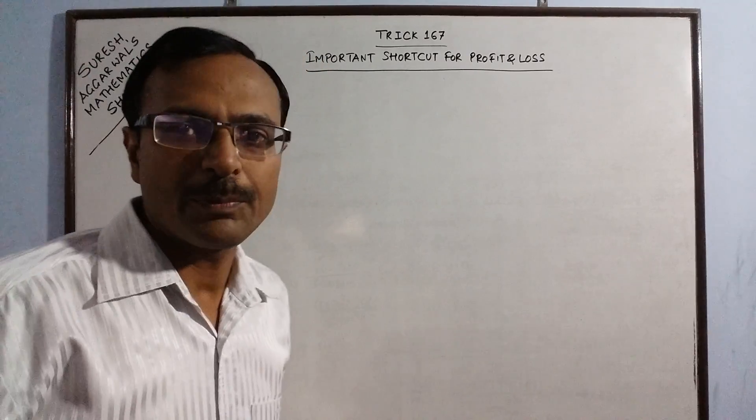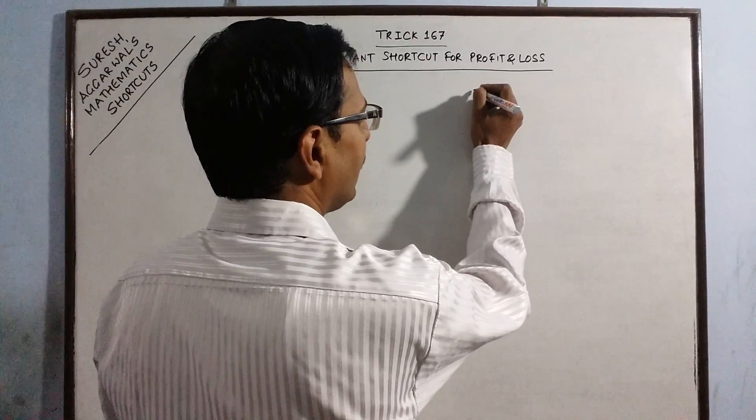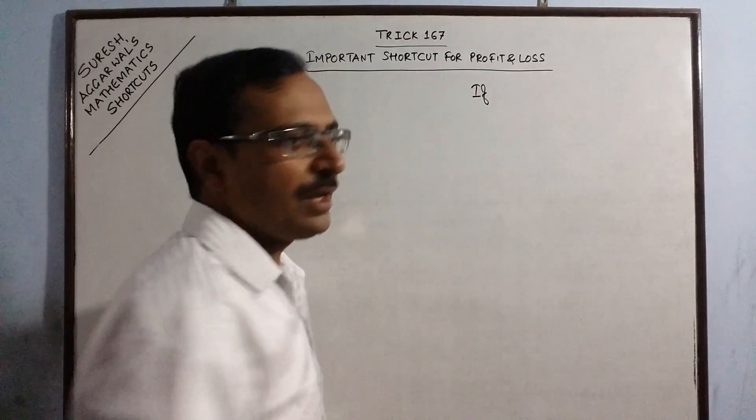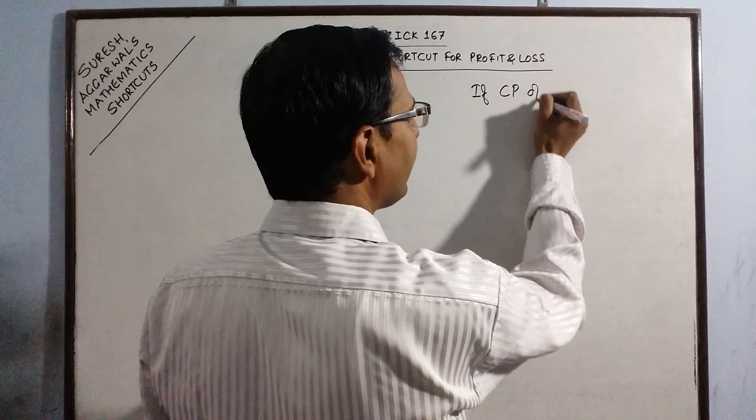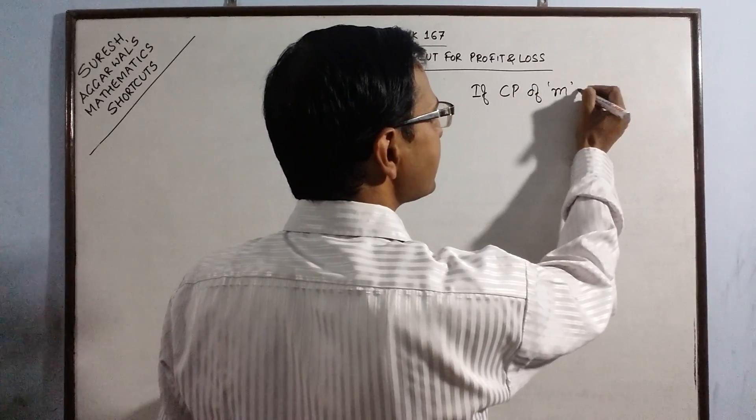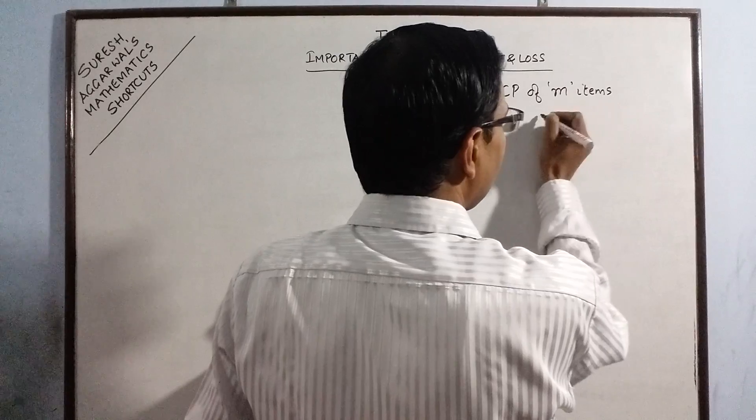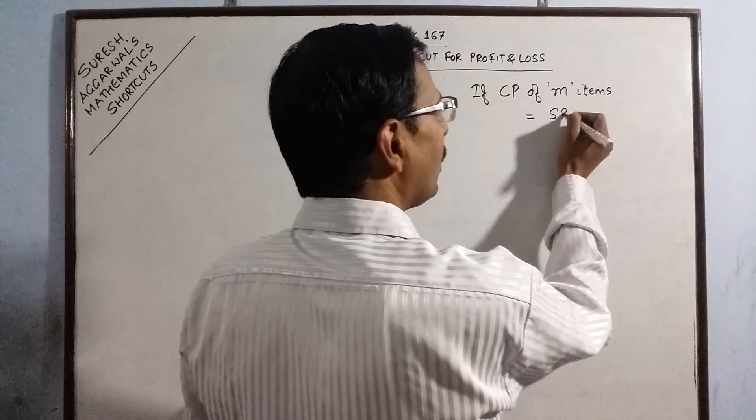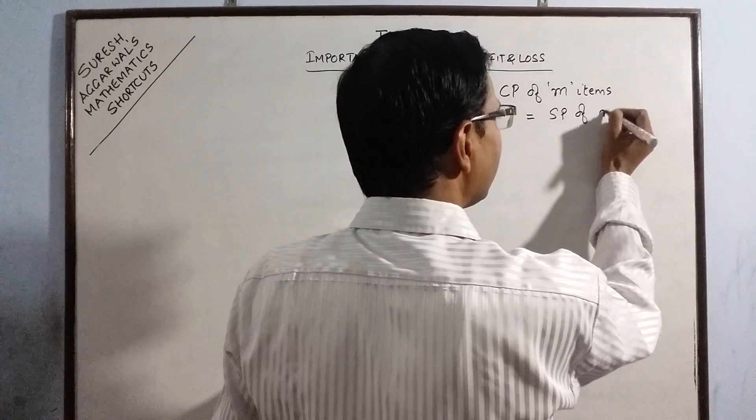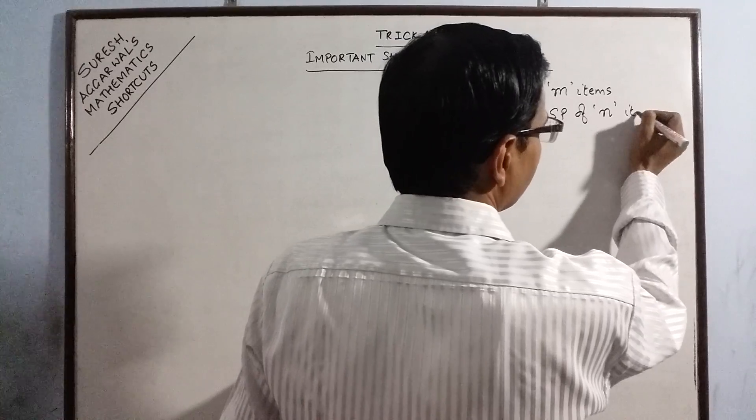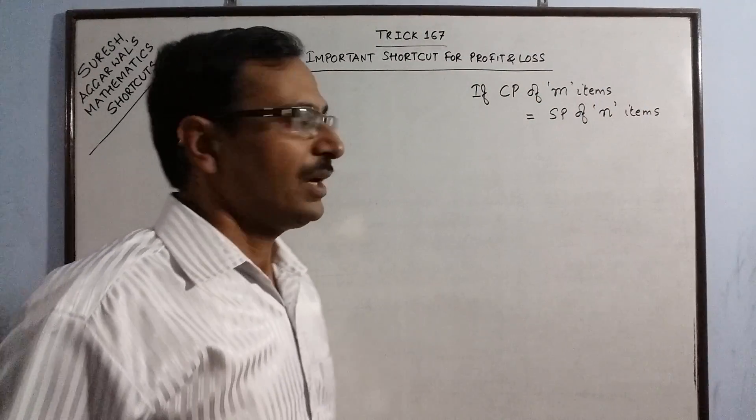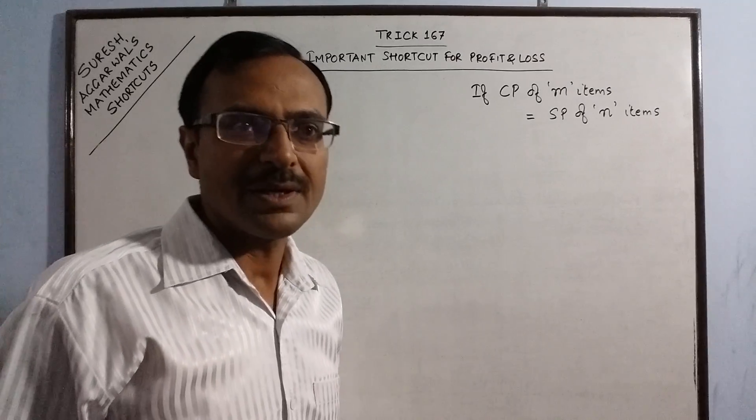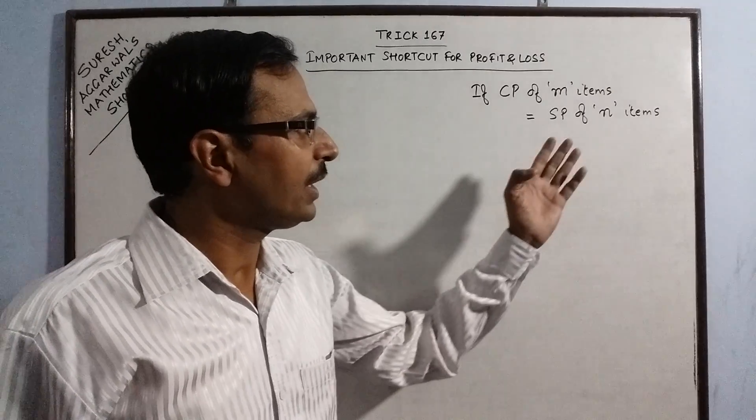So, this particular type of problem is like this. If we have been given that CP of a particular number of items, say m items, is equal to SP of a particular number of items, say n items. Now, this is very common condition given in competitive exams. If CP of m items is equal to SP of n items,